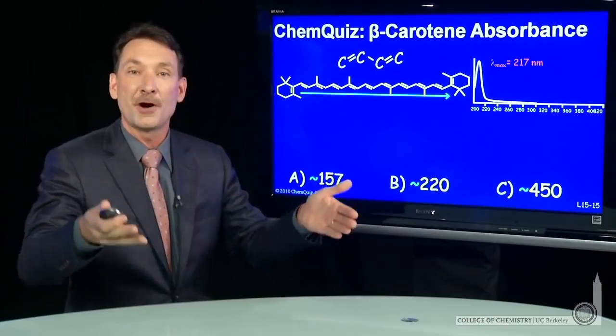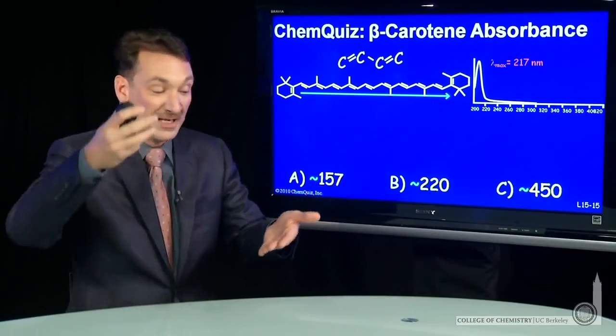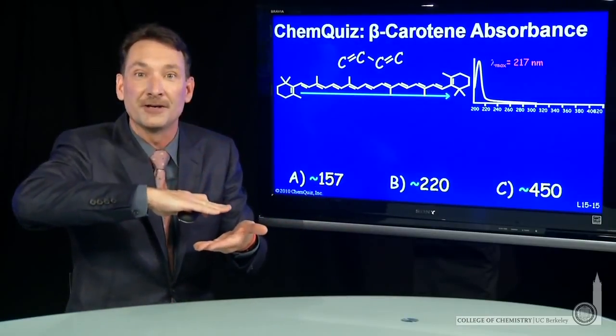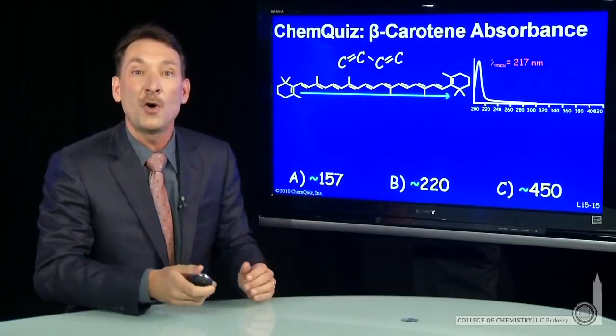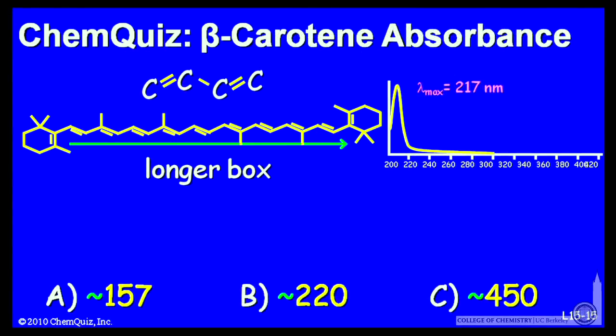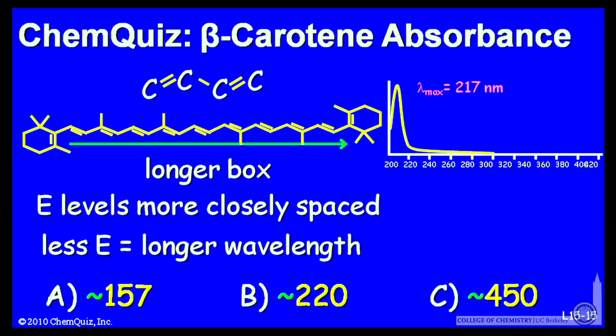A longer box in our particle in a box explanation would mean the energy levels get closer together. So the transitions are lower energy. Lower energy transitions are longer wavelength. So we'd expect beta-carotene to absorb at a longer wavelength than butadiene.